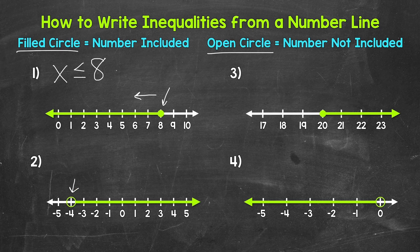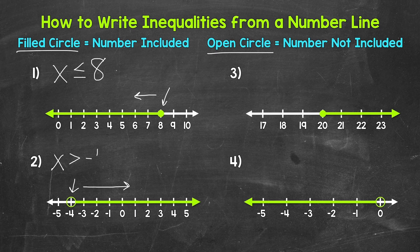Let's move on to number two, where we have an open circle at negative four, and then an arrow pointing to the right — going the direction of all of the numbers greater than negative four. So we have x is greater than negative four. Now, is negative four included in these solutions? No. So we do not have a greater than or equal to — it's just greater than, because we have that open circle. That tells us that that number is not included.